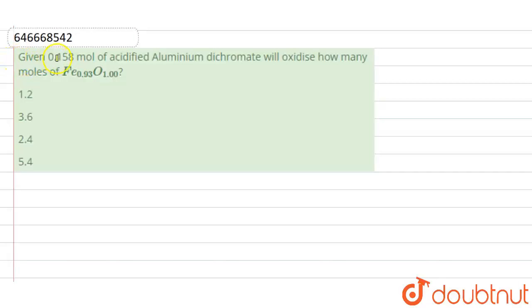The question says: given 0.158 mole of acidified aluminum dichromate will oxidize how many moles of Fe₀.₉₃O₁? The options given are 1.2, 3.6, 2.4, and 5.4. Now first we have to calculate the percentage of Fe²⁺ and Fe³⁺ in Fe₀.₉₃O₁.